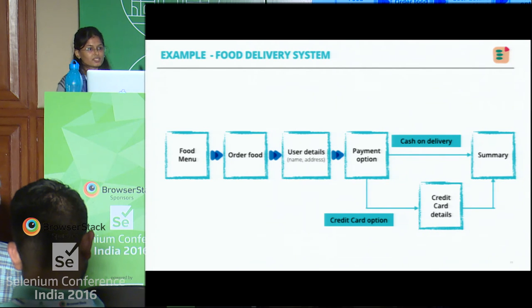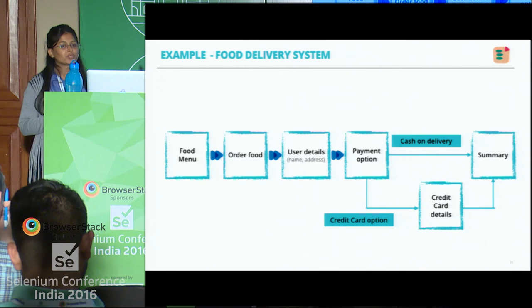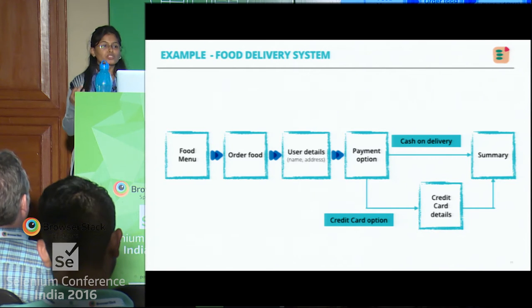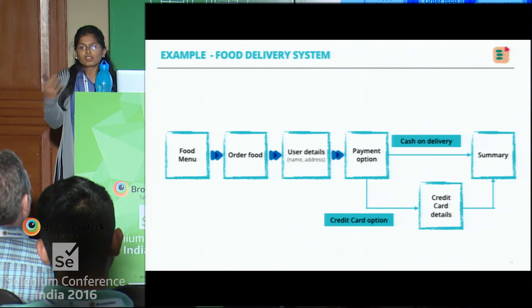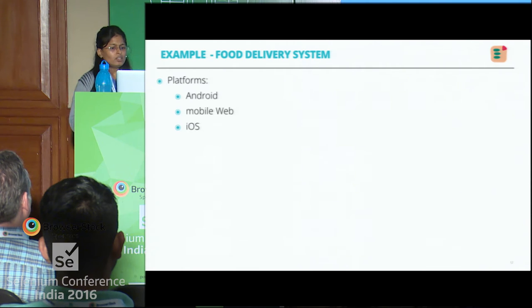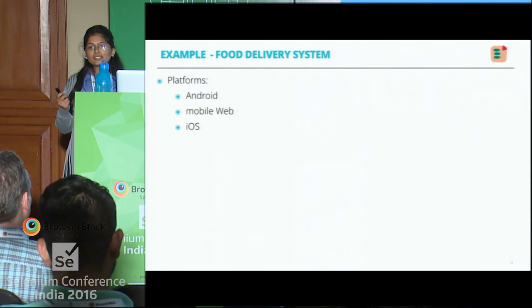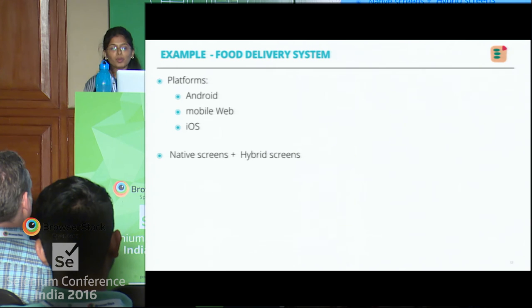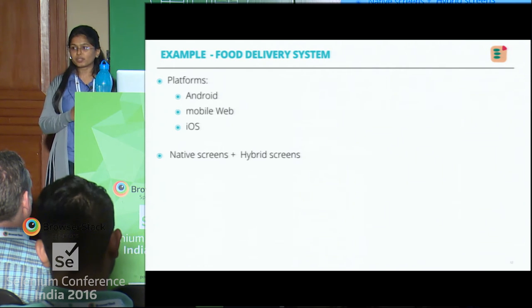I am the product owner of this app. I'll be starting with Android but I want to reach multiple customers, so I'm thinking of launching for iOS and mobile web as well — I don't want to launch Android alone. The platforms we'll have are Android, mobile web, and iOS. And I don't want to repeat myself in development, so I will use something like PhoneGap or Kalatrava to reuse my code. What I'll end up having is native screens as well as hybrid screens.